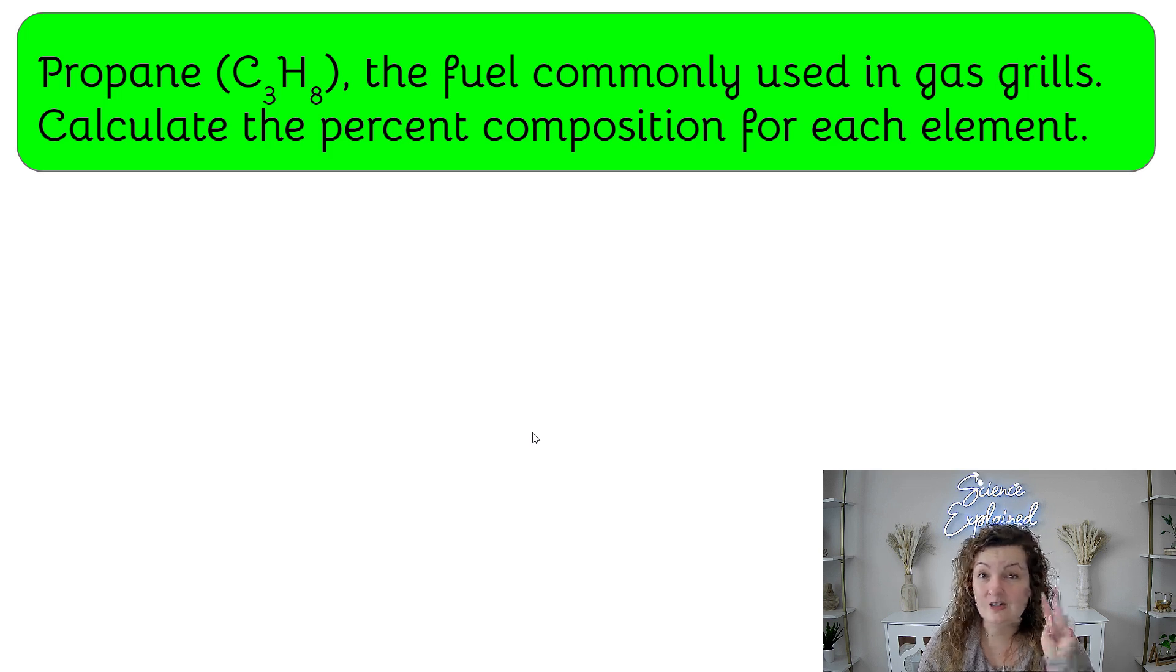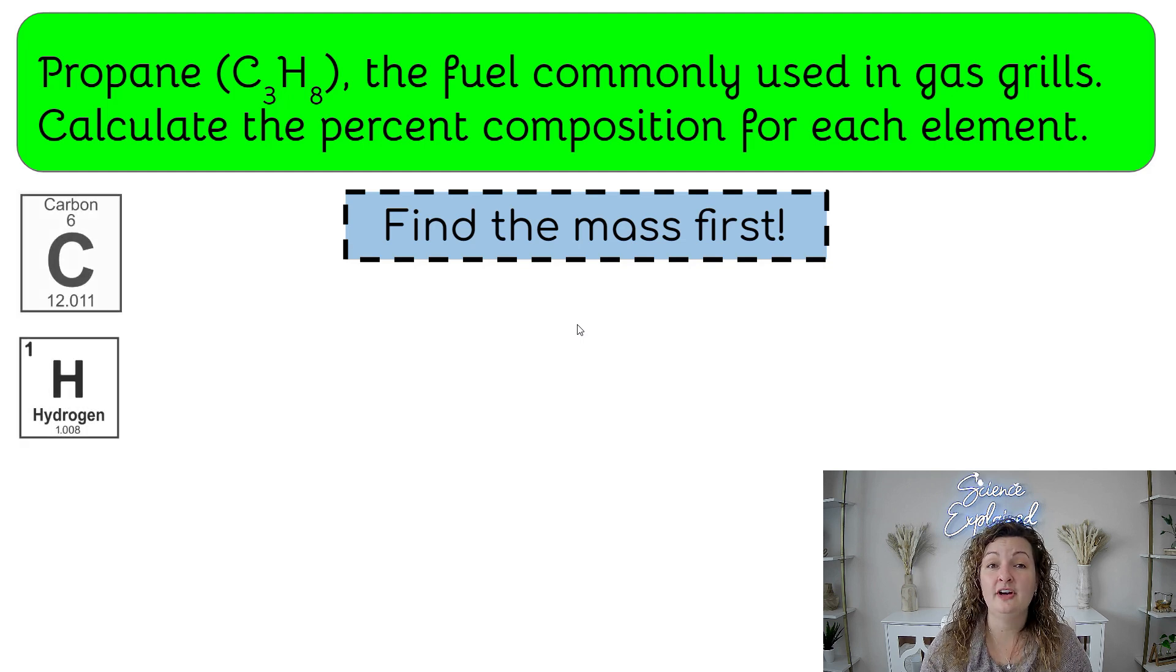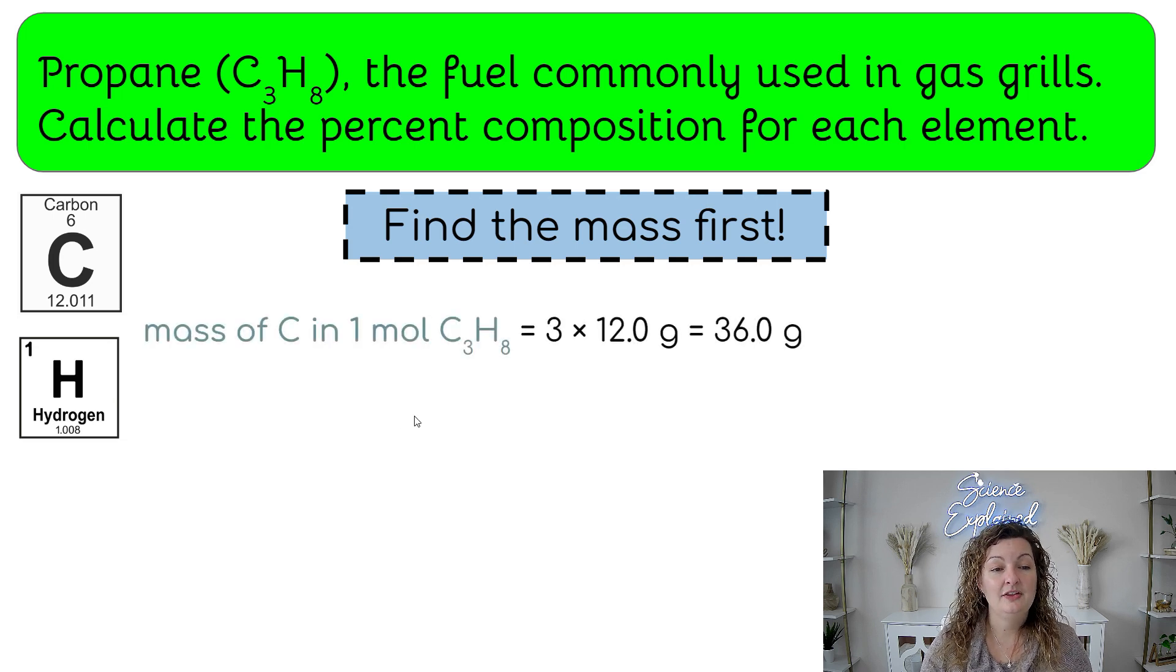This is really asking us to do two questions because we have two elements. We have carbon and we have hydrogen, and it's saying for each element, calculate the percent composition. So we're going to kind of break this down into two different sections, right? We're first going to find the mass. Go to the periodic table. Go ahead and look up carbon and hydrogen, and then you're going to go ahead and take the mass.